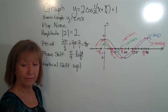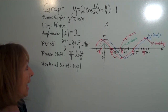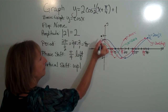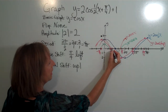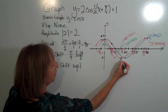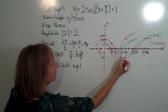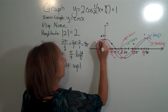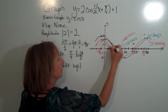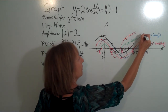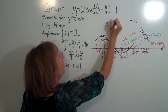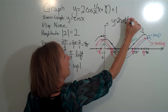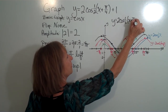The last step is the vertical shift up 1. Every dot on the most recent graph just moves up 1. Each key point shifts up by 1, following through all the points as we go. This gives us our final graph of y = 2cos(½(x + π/4)) + 1.